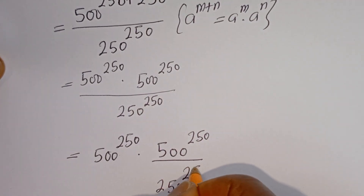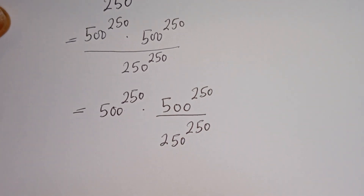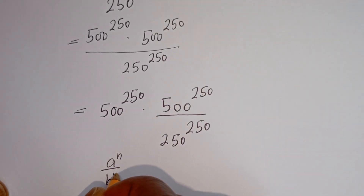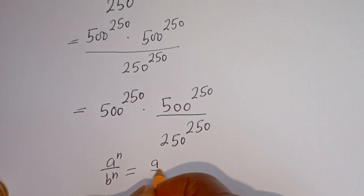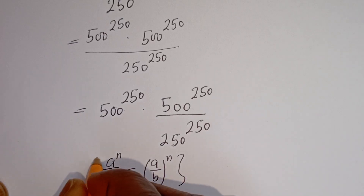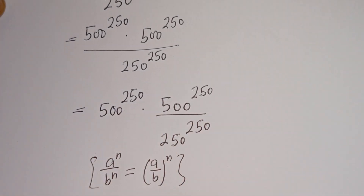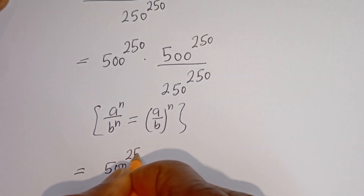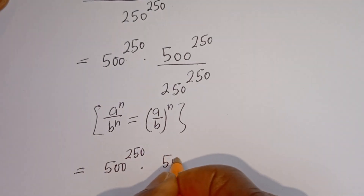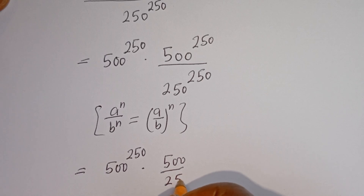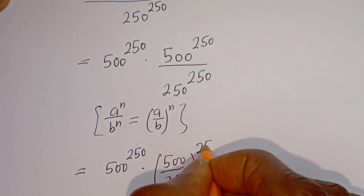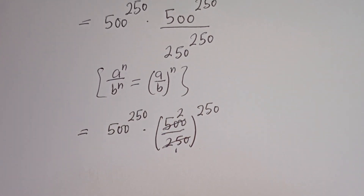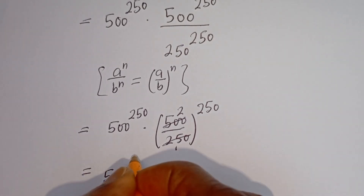Take note that if you have a to the power of n over b to the power of n, this is equal to a over b to the power of n. So this can be written as 500 to the power of 250 multiplied by 500 over 250, to the power of 250. Since 500 divided by 250 equals 2, this is equal to 500 to the power of 250 multiplied by 2 to the power of 250.